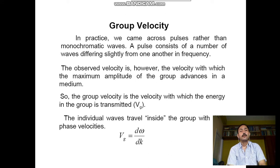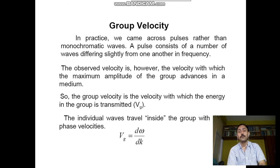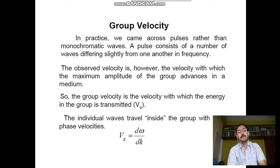Group velocity: in practice we come across pulses rather than monochromatic waves. A pulse consists of a number of waves differing slightly from one another in frequency. The observed velocity is the velocity with which the maximum amplitude of the group advances in a medium. Group velocity is the velocity with which the energy of the group is transmitted, represented as vg. Individual waves travel inside the group with their phase velocities. vg = dω/dk.